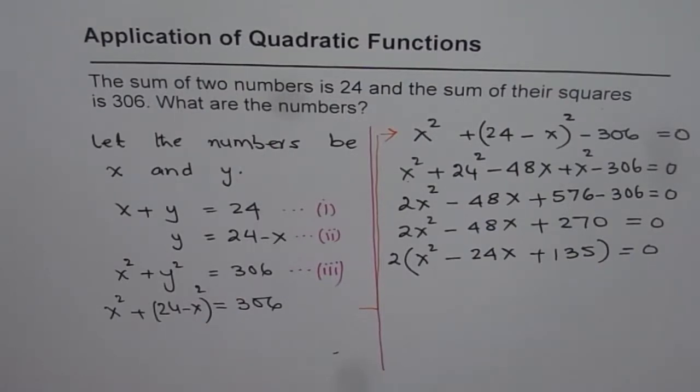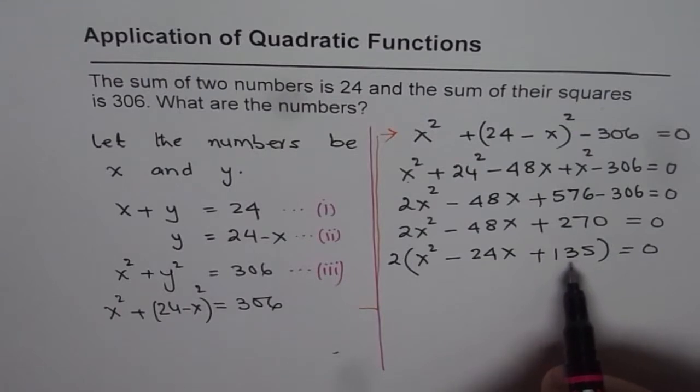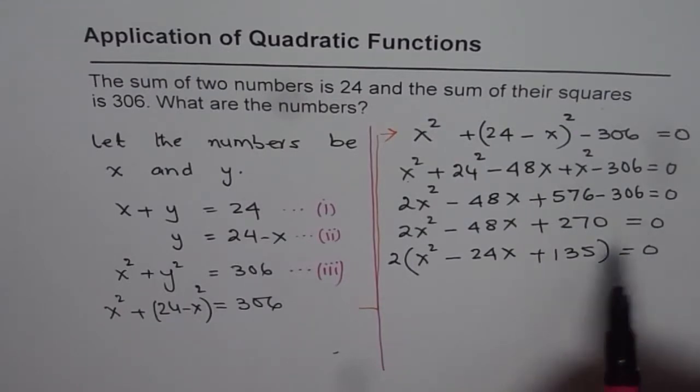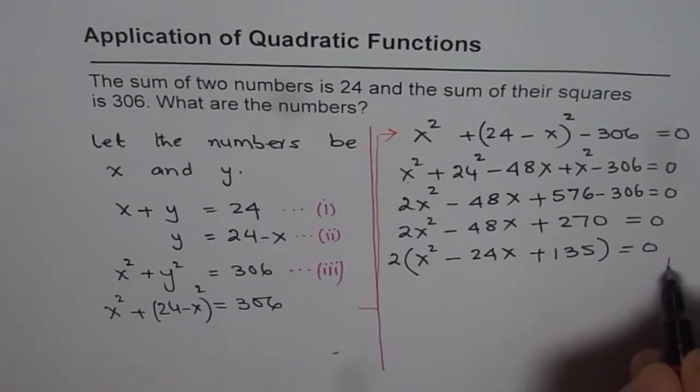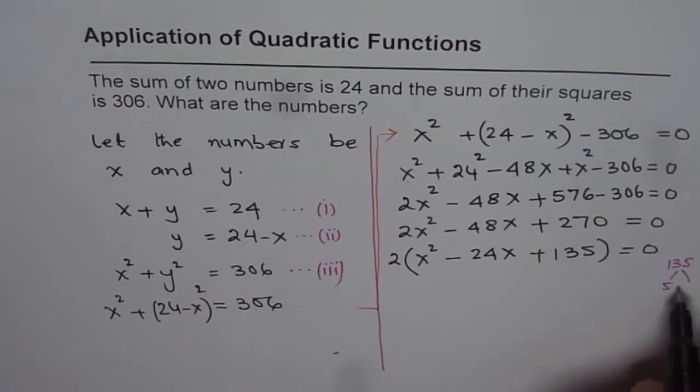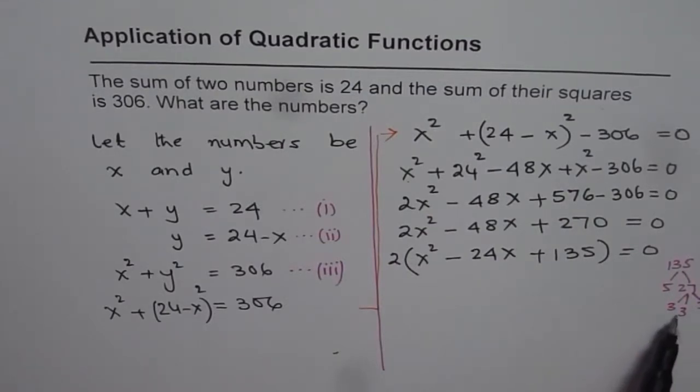Now how to factor when big numbers are involved? 135 is a big number. So let us find all the possible factors of 135. 135 could be 5 times 27. 27 could be written as 9 times 3 or 3 times 3 times 3. That is what when multiplied will give you 135.